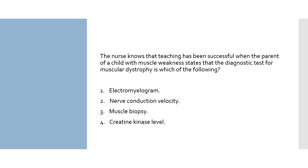Number one: electromyogram — this test is part of the workup for muscular dystrophy, but is not the test that confirms the type of muscle disorder. Number two: nerve conduction velocity — this test is also part of the workup, but does not confirm the type of muscle disorder. Number three: muscle biopsy — muscle biopsy is the test used to confirm the type of myopathy the patient has; this looks like our answer, but we will review the final option to make sure. Number four: creatine kinase level — this is found in muscle tissue and would be high in muscle disease. Number three is our answer; it is the test used to confirm muscular dystrophy.